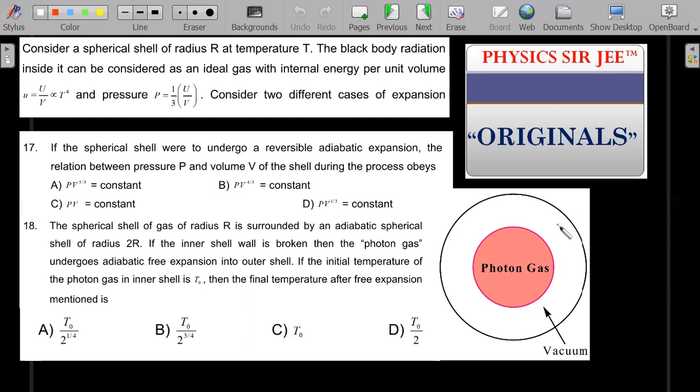The first part of the problem was inspired from a previous JEE Mains question. I have added my own twist to the problem in the second part. Consider a spherical shell of radius R at a temperature T. The black body radiation inside it can be considered as an ideal gas with internal energy per unit volume u equal to U/V which is proportional to T^4 as per Stefan's law, and the pressure that this particular gas which is made of photons exerts on the wall is given by 1/3 times U/V.